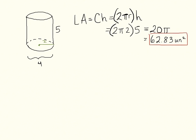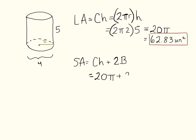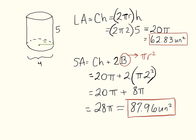Now for the surface area: SA = circumference × height + 2 × area of the bases. We already have the circumference times height, which is 20π. The area of one circle is πr² = π(2²) = 4π, so 2 times that is 8π. Adding 20π + 8π gives 28π, and using a calculator we get approximately 87.96 units squared.